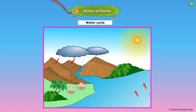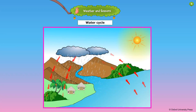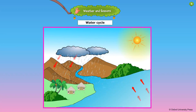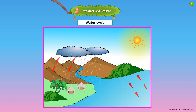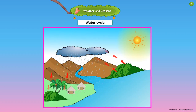When water vapor reaches high up in the sky, that is the cooler regions, it condenses and forms droplets of water. These droplets settle on dust particles, group together and form clouds, and then fall down as rain.